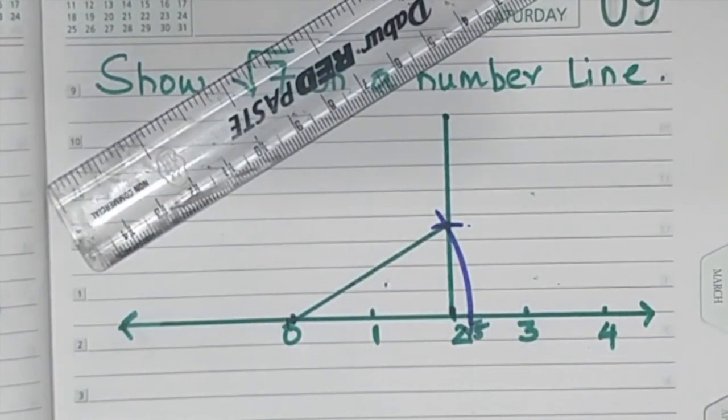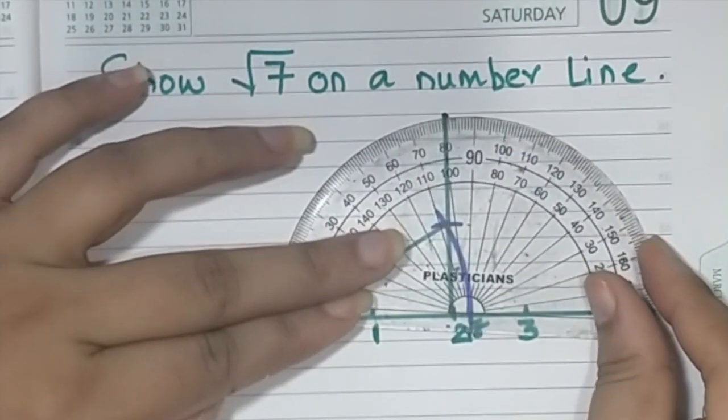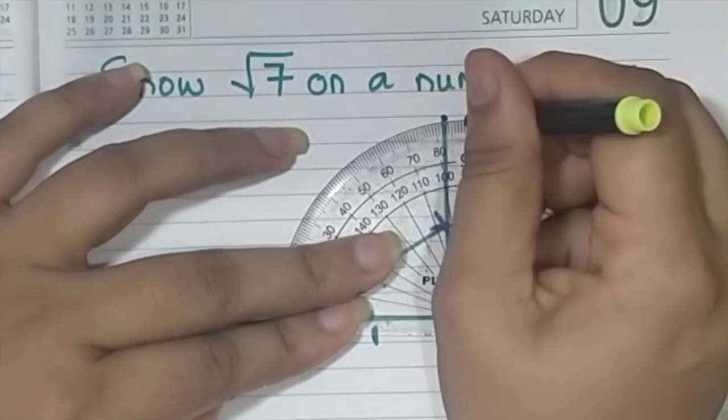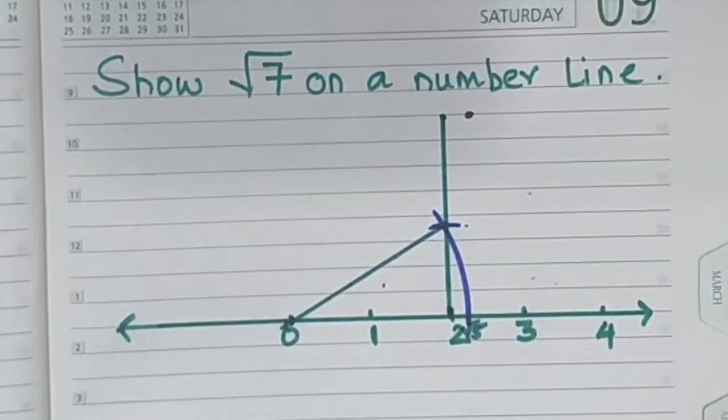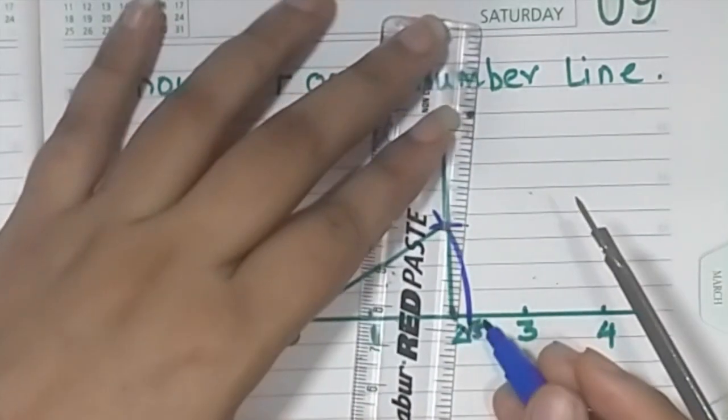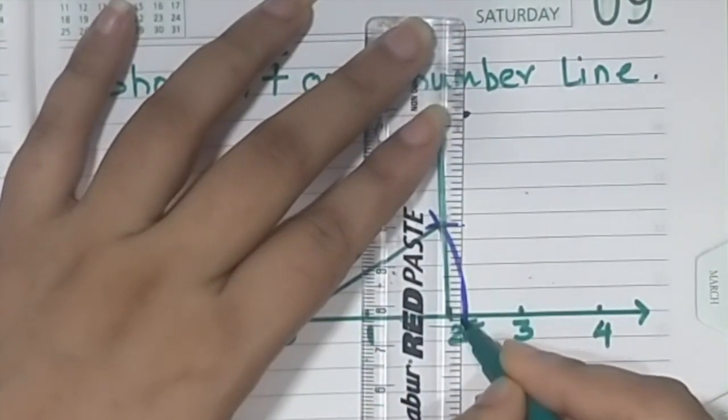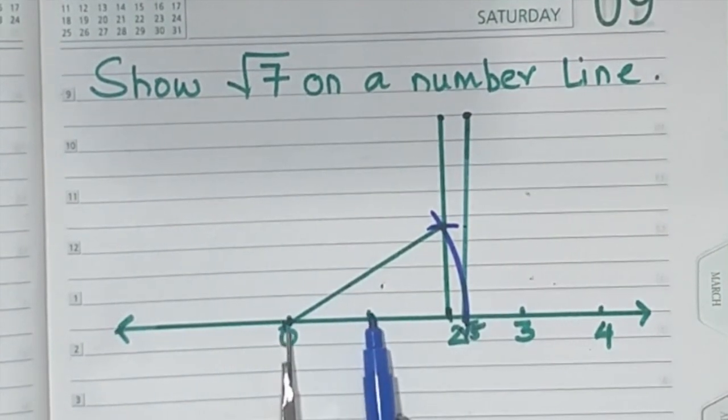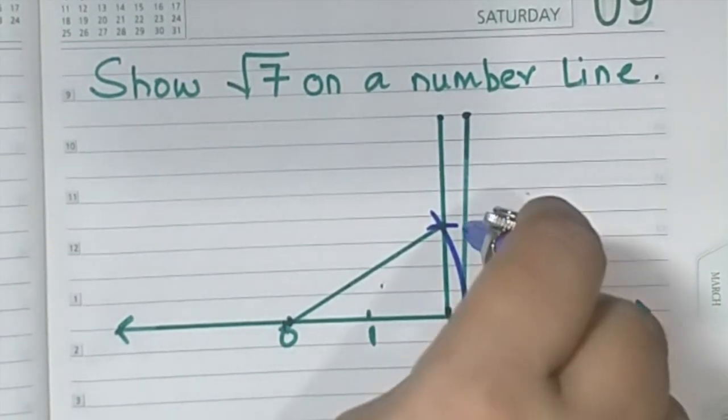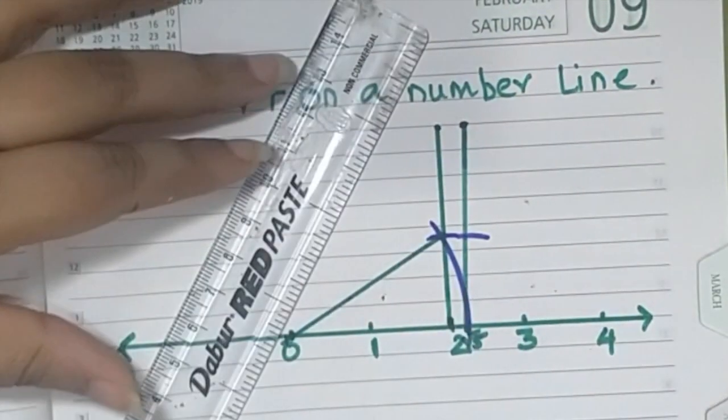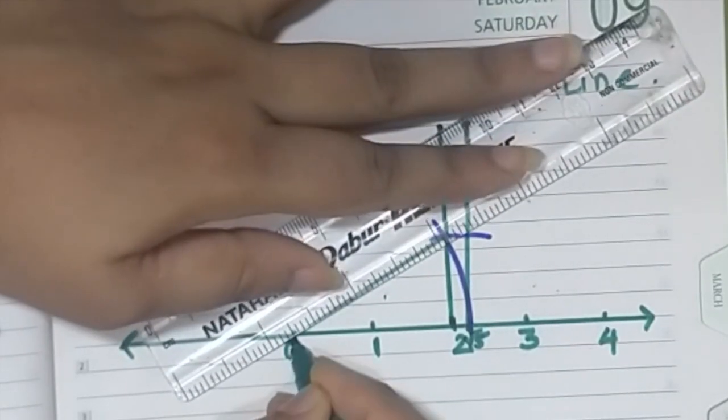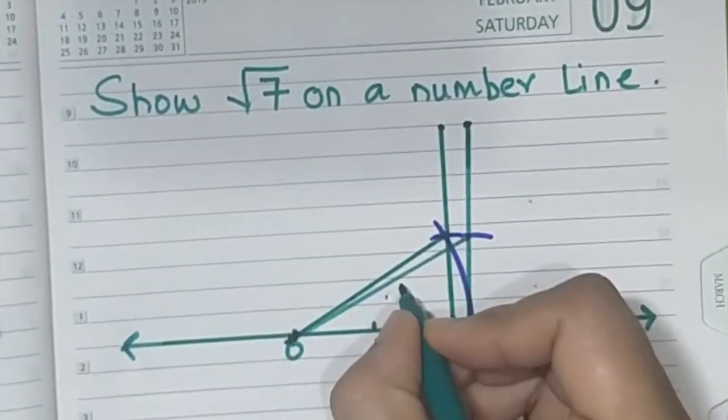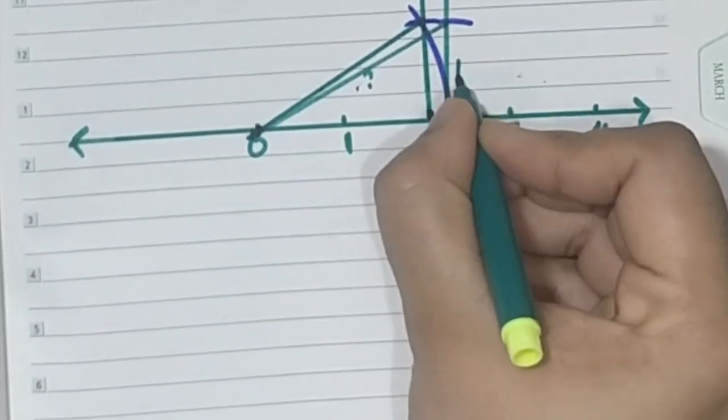Now at root 5, again draw 90 degrees. Join, take a distance of 1 unit, keep a pointer here, mark, join. The procedure remains the same. Now we need to find out how much is this. This is root 5 and this is 1 unit.